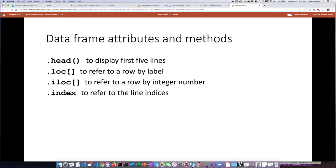We can use .loc by referring to a particular row by its label, and what we put in the square brackets is a string. We can use .iloc if we want to refer to a row by its index number.